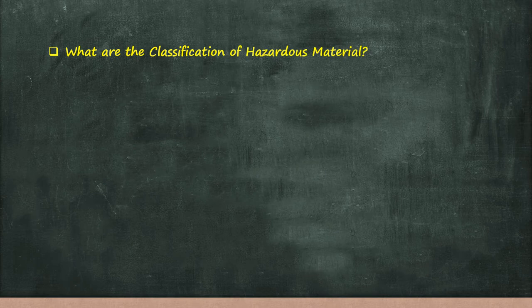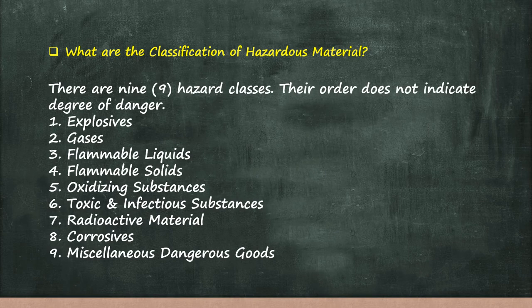What are the classifications of hazardous material? There are nine hazard classes: explosives, gases, flammable liquids, flammable solids, oxidizing substances, toxic and infectious substances, radioactive material, corrosive, and miscellaneous dangerous goods.